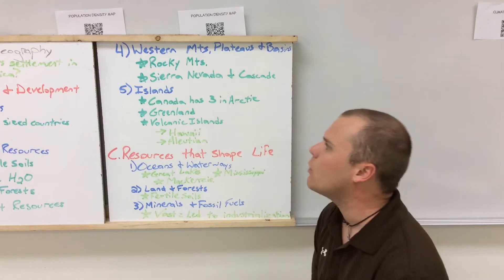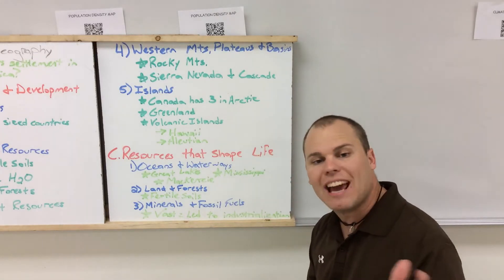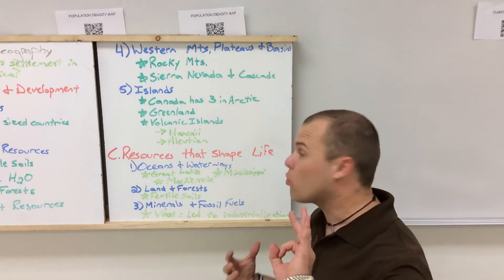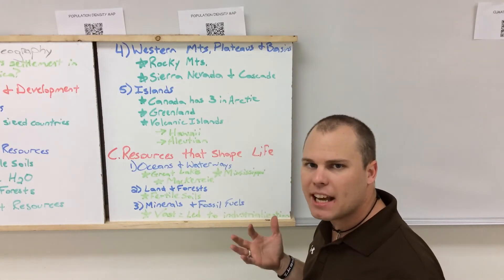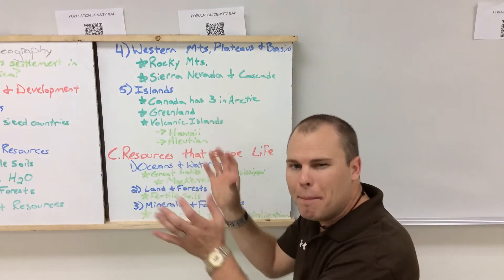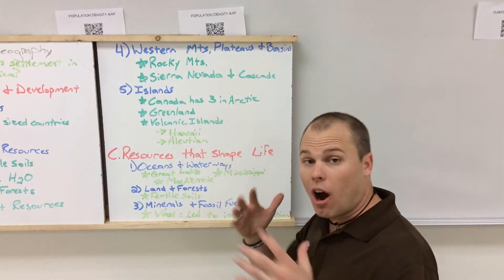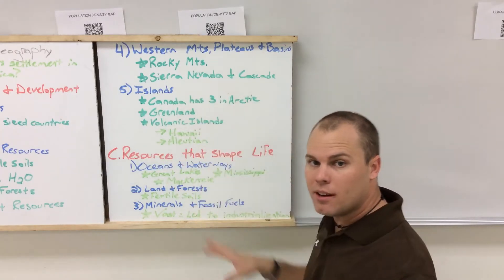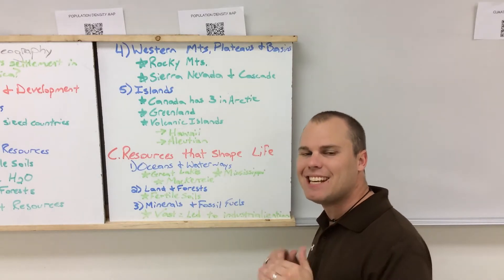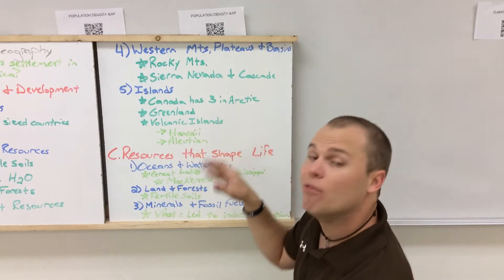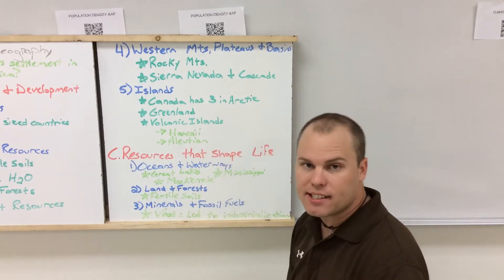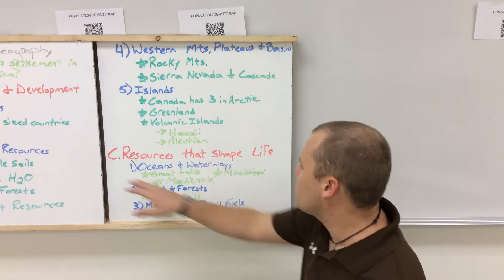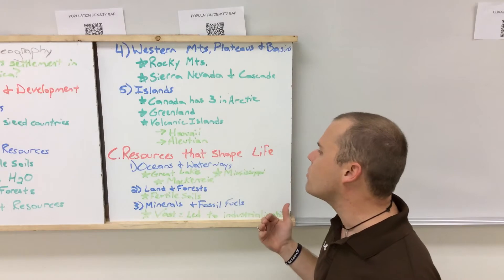Towards the west you also have the Sierra Nevada mountain ranges and the Cascade ranges, which run parallel to the Pacific Ocean along the California and Canada coastline. Canada has three different islands in the Arctic Circle with very little habitation because it's so cold. Greenland, a massive island to the northeast of Canada, looks the size of Africa on Mercator projections due to distortion, but is actually 16 times smaller than Africa. The U.S. also has volcanic islands — Hawaii and the Aleutian Islands near Alaska.